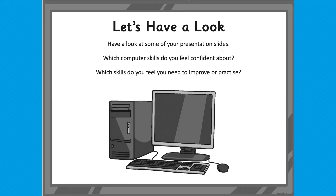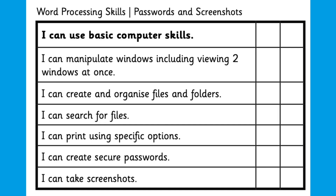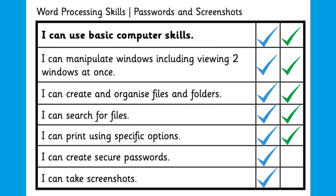Children are then given the opportunity to reflect on their own learning. This is a great way for them to self-assess and for you to see if there's anything that needs to be covered in more detail. This can also be achieved by using our success criteria grid found within the pack. Children can place a tick next to their 'I can' statements that they feel confident about, and you can then place a tick next to theirs if you feel that they have understood the concept.